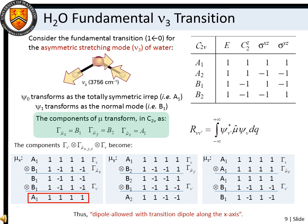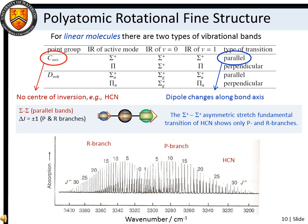It turns out that perpendicular and parallel transitions result in distinct spectra. For example, in linear molecules, only two types of vibrational modes are possible. Sigma modes involve stretching along the bond axis, or parallel transitions, and pi modes involve bending motion perpendicular to the bond axis. Here we see an example of a sigma-sigma transition for HCN. The transition exhibits the familiar P and R branches owing to the delta-J equals plus or minus one selection rule.